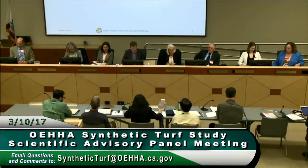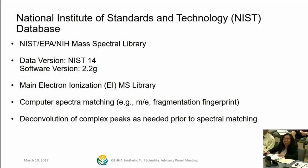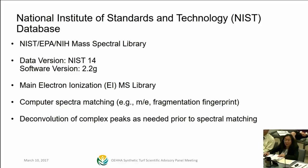The first step is building a list of potential synthetic turf chemicals. We'll use the National Institute of Standards and Technology database, the NIST database, compiled by NIST, EPA, and NIH. We'll use computer spectrum matching and mass ion ratio fragmentation fingerprinting to identify chemicals extracted from turf material. For more complex peaks, they'll go through a deconvolution process before spectrum matching. Dr. Maddalena will give more detail.